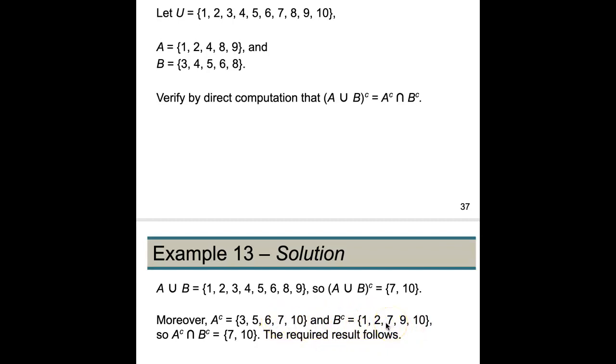Okay, if we look at the intersection between these two, what elements they have in common, we see that they have 7 and 10 in common. So A^c ∩ B^c is the same as (A ∪ B)^c.